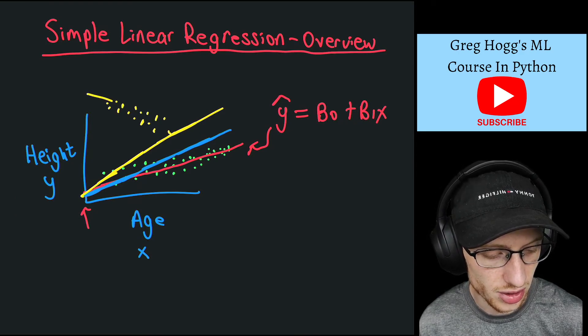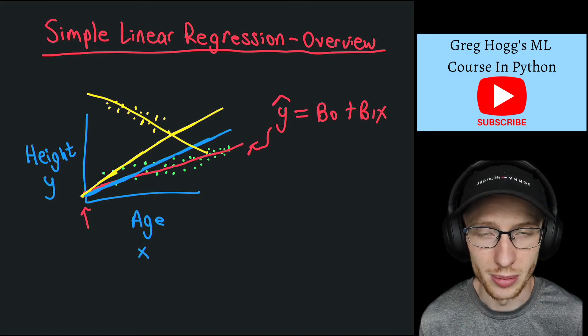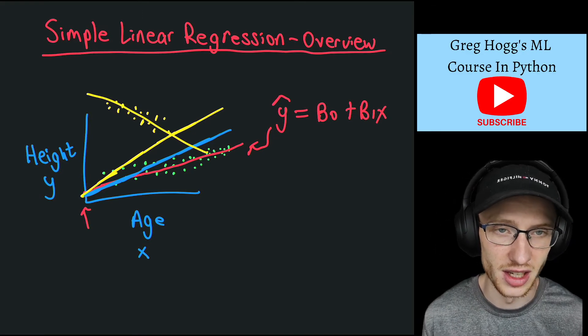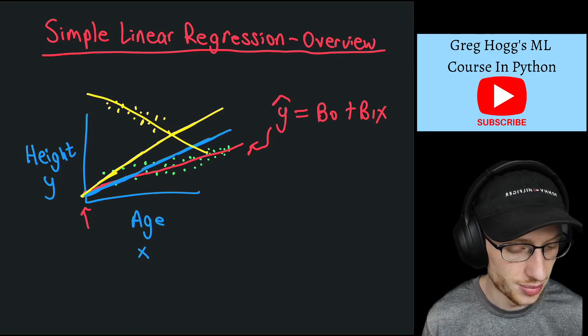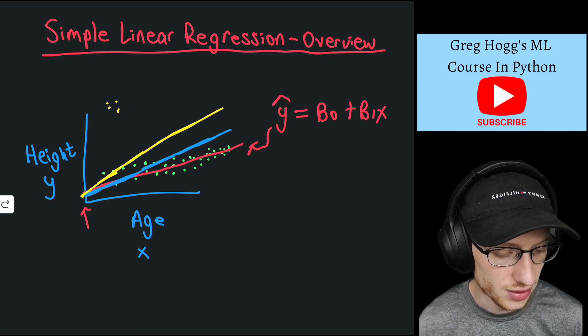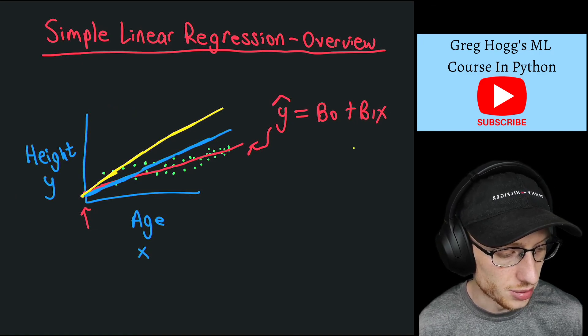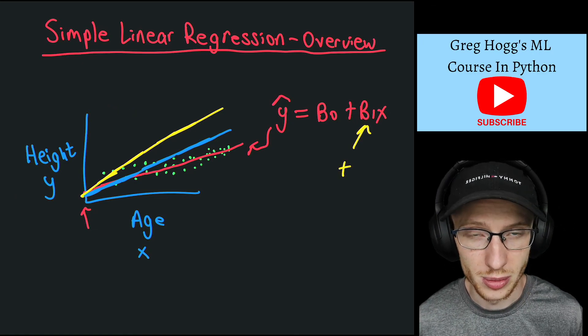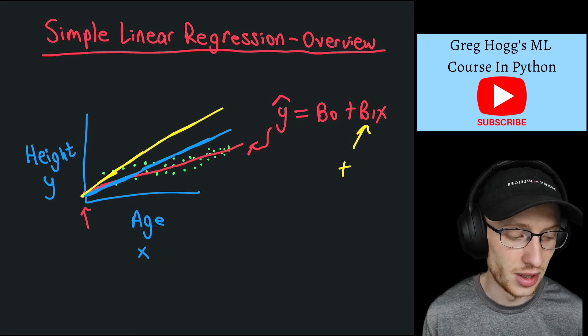And we could have drawn a line like that. That would mean that beta 1 is negative. As in, as x increases, y is going to decrease. But right now we're assuming that the way that we drew it, we actually mean that beta 1 is positive. Okay, so beta 1 is positive, as x increases, y increases.